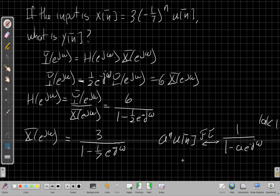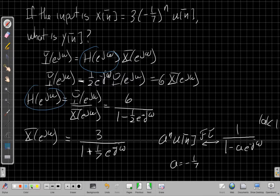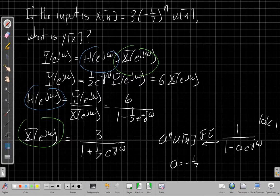As long as the magnitude of a is less than 1. In this example, a = -1/7. Oh, I caught my mistake here - this is plus 1/7 in the denominator when I put in a = -1/7, and it's three times that because of the scaling property. So now I have the two pieces I need: H(e^jω) and X(e^jω). I can just multiply these together to get Y(e^jω).